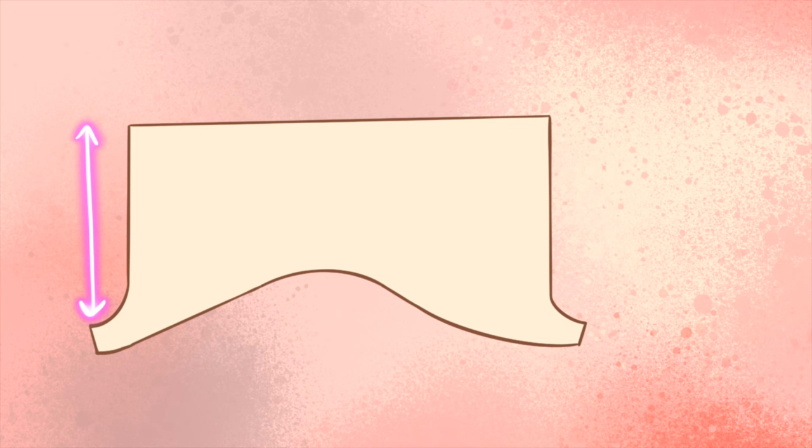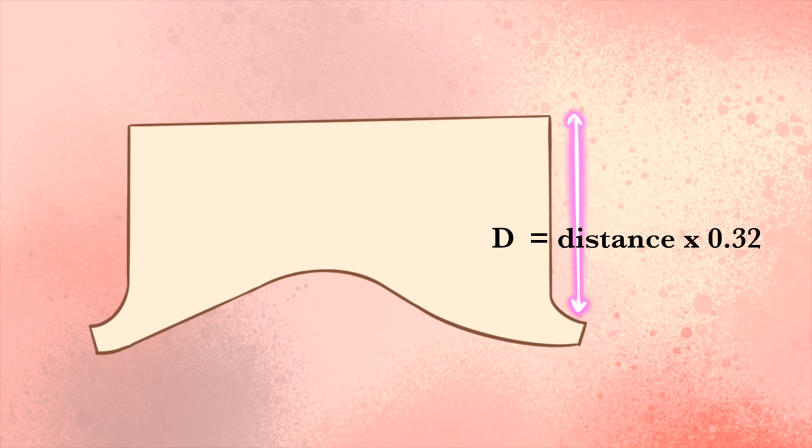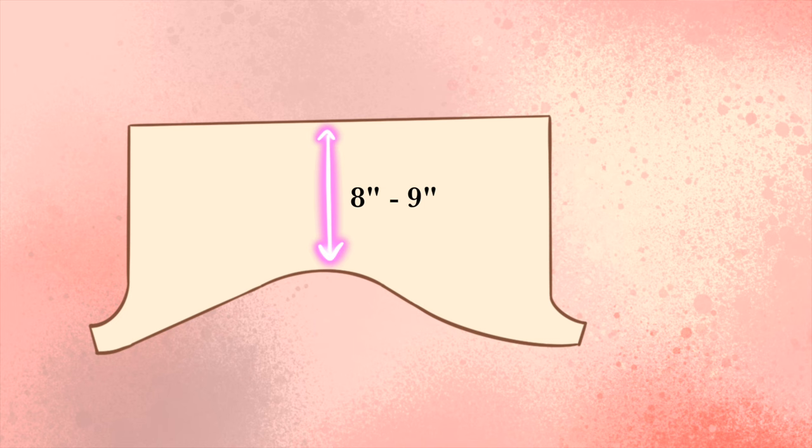To find the measurement of the front crotch line or measurement C, take your distance measurement from waistband to floor and multiply that by 0.28. To find the measurement of the back crotch line or measurement D, take your measurement distance from waistband to floor and multiply that by 0.32. The waistline should slope gently down toward the front, and this center part here measures about eight to nine inches, depending on the size and your personal preference.